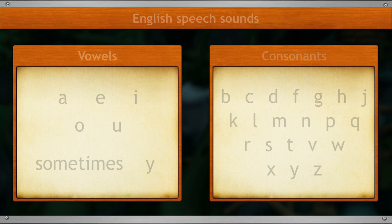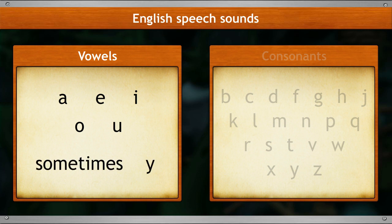As you already know, the English speech sounds have been divided into vowel and consonant sounds. Vowel sounds are A, E, I, O, U, and also Y sound at times.